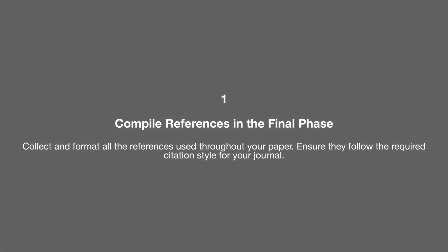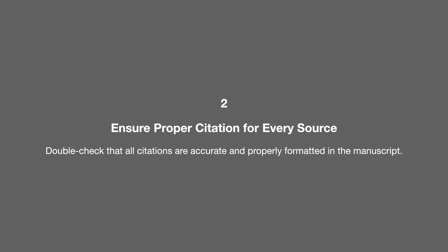The last stage is reference management. First, compile all your references in the final phase after you've written the introduction, and format them to follow the required citation style for your journal. This is really important because every journal has a slightly different style — if you don't match the requirements, your paper will most likely be rejected. Second, double-check all citations in your paper before submitting, as it's easy to miss a citation or reference it incorrectly when writing quickly.